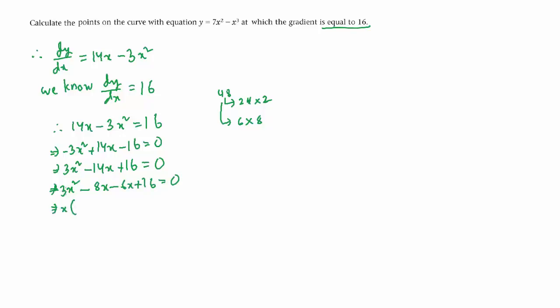Let's take x common here. It will be x(3x - 8). Now let's take 2 common here. This will be -2(3x - 8) = 0. If we take 3x - 8 common we will get (3x - 8)(x - 2) = 0. Therefore x = 8/3 or x = 2.